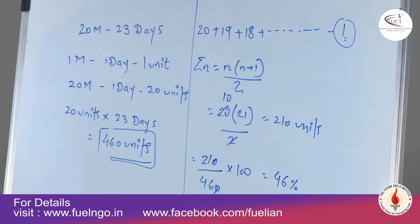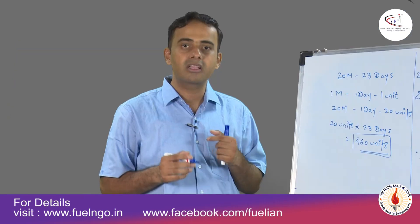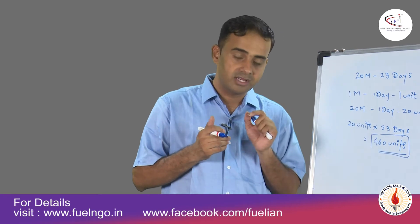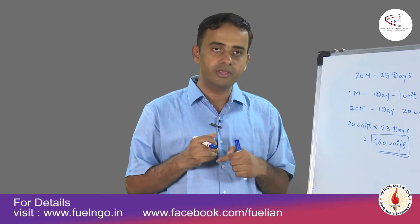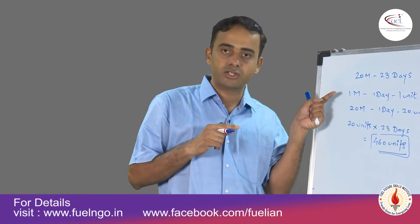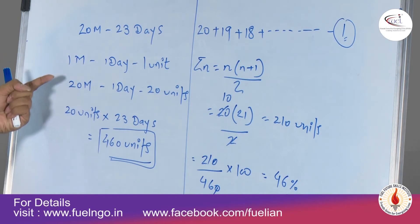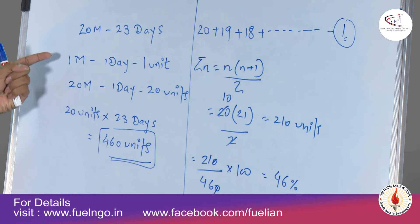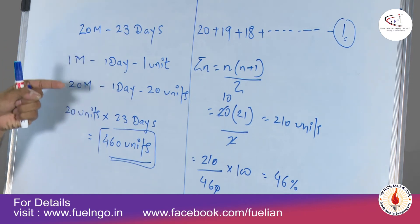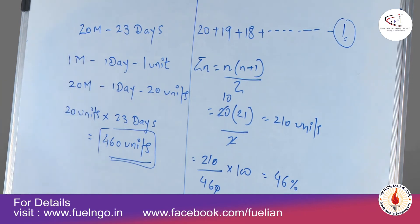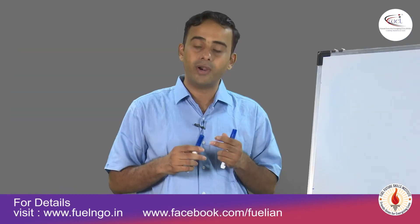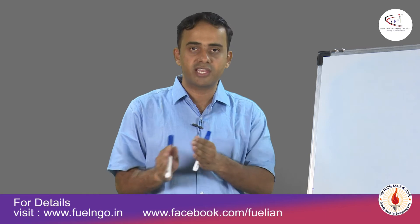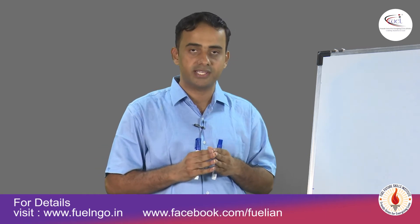When the last man leaves, the work completed is approximately 46 percent. The basic approach: when you have a problem like this, convert the work into units assuming one man's one-day work equals one unit. Next we look at what happens when multiple variables come into play in work equivalence.